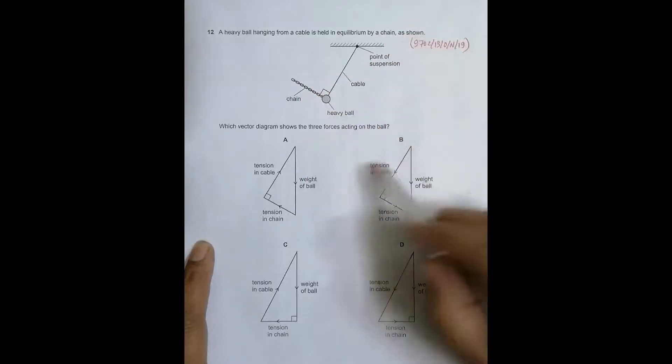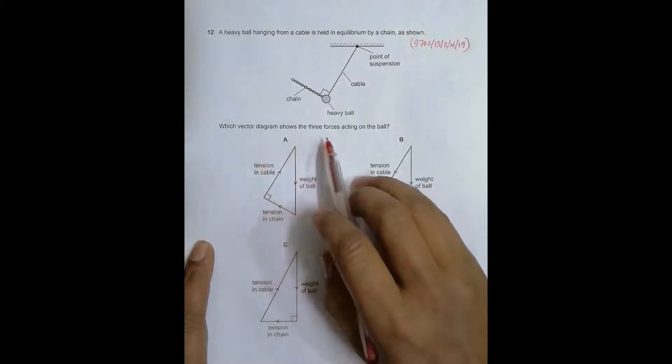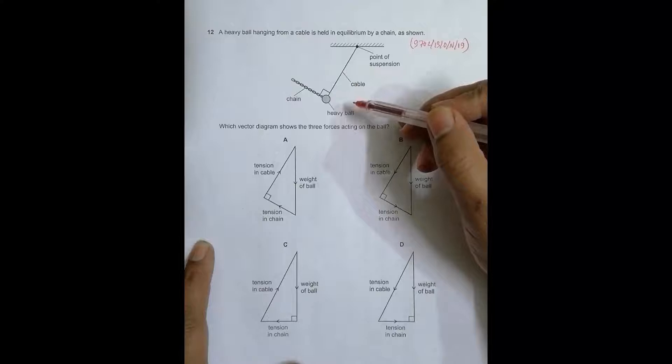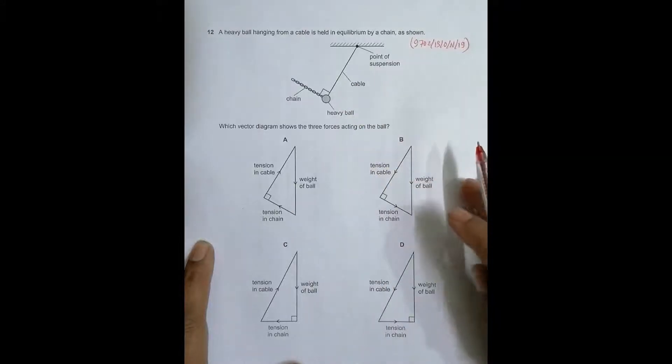The cable is here, chain is here—I made a mistake in the beginning. The question asks which vector diagram shows the three forces acting on the ball, so we have to identify the three forces first, then find which diagram represents those three forces.